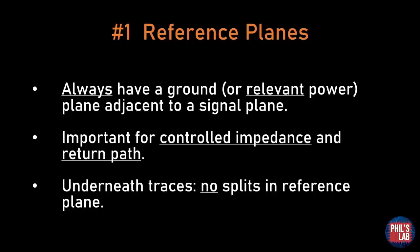There are three things we need to take care of. We always want to have a ground or relevant power plane adjacent to a signal plane. So directly below a PCB trace carrying a USB 3 signal, for example, we want a ground plane. A relevant power plane can also be used, meaning it comes from the voltage source that actually generated that signal. This gives us a controlled impedance trace and is important for the return path, which is equally as important as the forward path. For AC signals above about 1 kHz, the return path is directly below the signal trace.